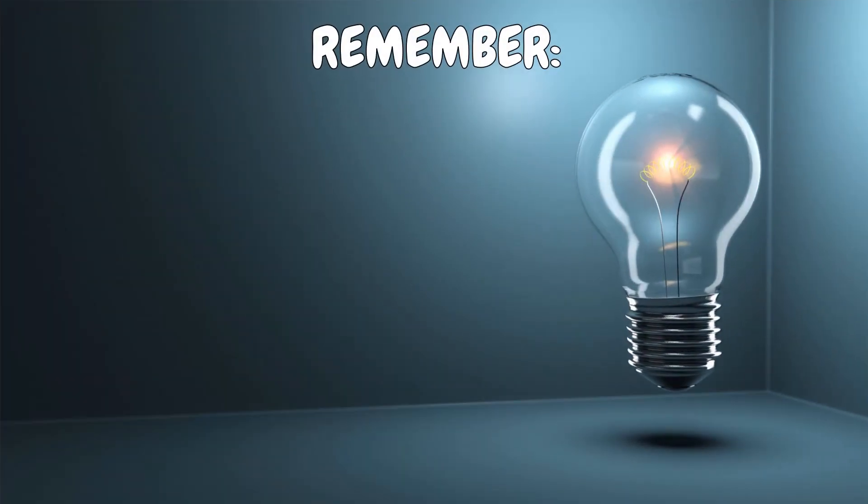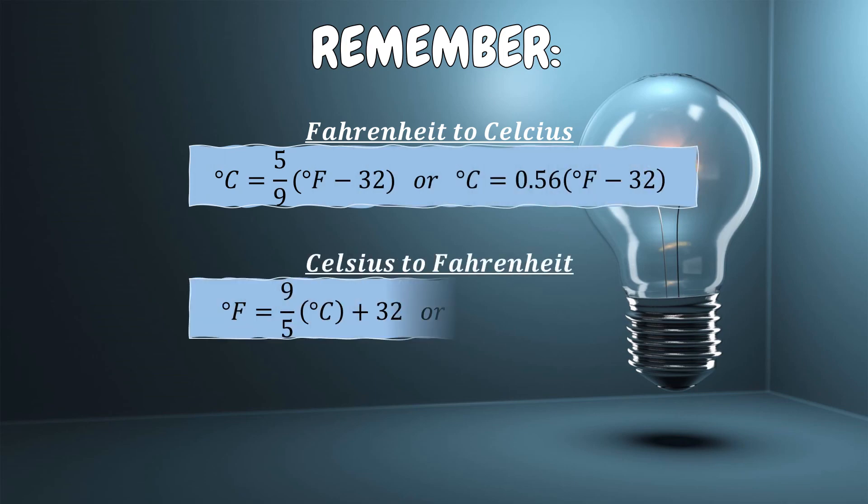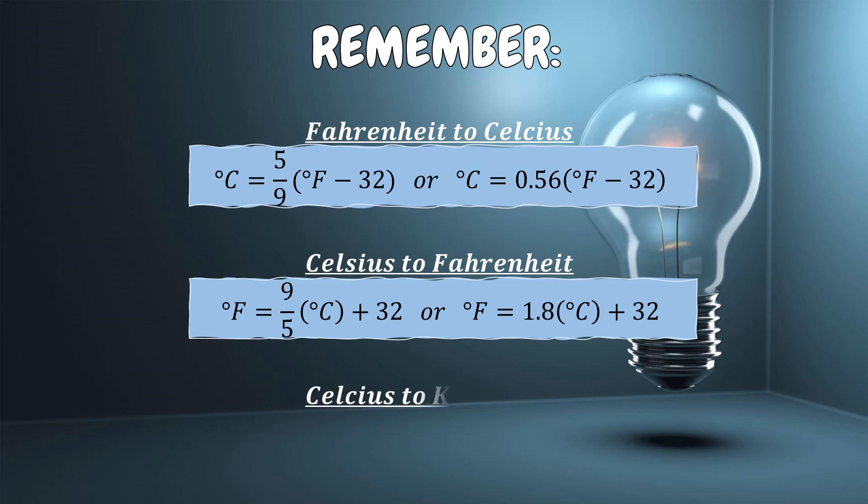Let us now summarize what we have learned about measuring temperature. To convert Fahrenheit to Celsius, we use this formula. Converting Celsius to Fahrenheit uses this formula. It's either 9/5 or 1.8, and likewise 5/9 or 0.56. For calculating or converting Celsius to Kelvin, we use this formula.